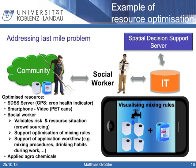Looking closer at this example, we can determine the optimized applied resources. The spatial decision support system provides the crop health information and the related mixing rule for the specific agrochemicals. Then the smartphone is used to visualize the video or picture of the mixing rule. Afterwards, the social worker fulfills several tasks: first, validating the risk and resource situation provided by the system; then delivering the mixing rule information to the agricultural community and supporting them with the application workflow like mixing procedures or drinking habits during work. Finally, the amount of applied agrochemicals is optimized.